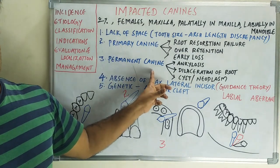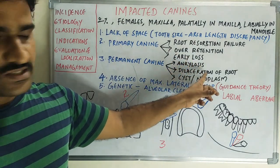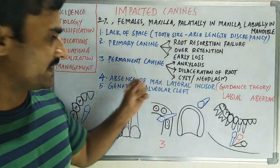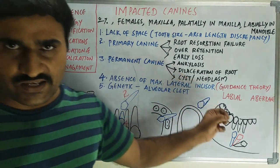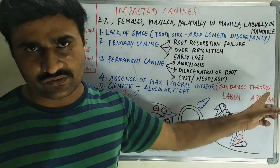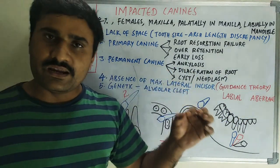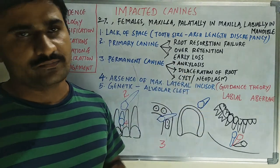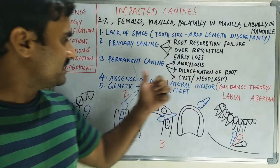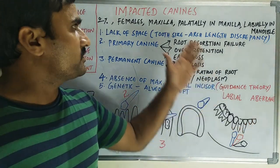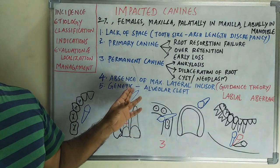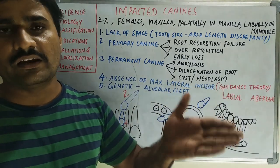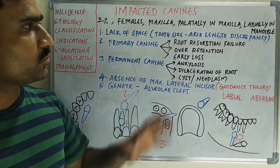Third are problems related to the permanent canine, such as ankylosis, dilacerations of the root, or cyst/neoplasm associated with the permanent canine. Fourth is absence of the maxillary lateral incisor. There is a guidance theory — the eruption of the maxillary canine follows the root of the maxillary lateral incisor. So absence of the lateral incisor leads to impacted canines.